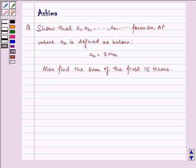Hello and welcome to the session. Let us understand the following question today. Show that a1, a2, ... an form an AP where an is defined as: an = 3 + 4n. Also find the sum of the first 15 terms.